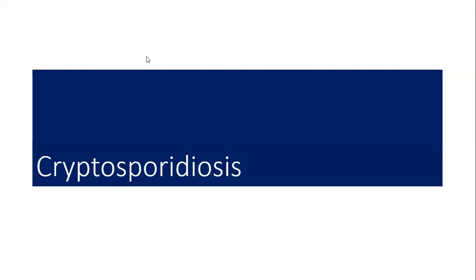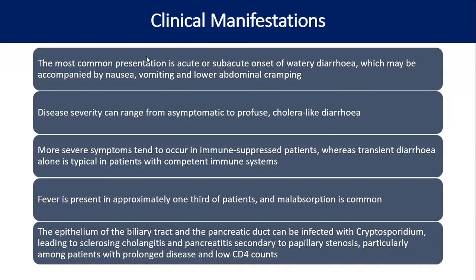Cryptosporidiosis most commonly presents as acute or subacute onset of watery diarrhea, which may be accompanied by nausea, vomiting, or lower abdominal cramping. Disease severity ranges from asymptomatic to profuse cholera-like diarrhea, more severe in immunosuppressed patients. Fever is present in approximately one-third of patients; malabsorption is common. Atypical presentation includes infection of the biliary tract and pancreatic duct epithelium, leading to sclerosing cholangitis and pancreatitis secondary to papillary stenosis — found in patients with prolonged disease and low CD4 counts.